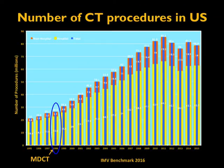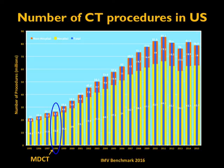I also want to discuss the growth of CT procedures in the US. This graph shows the number of CT procedures in the US over the past 15 years. The number of CT procedures has grown linearly from 26 million procedures in 1998 all the way to close to 80 million procedures as of 2015, both in hospital and non-hospital settings. Multi-detector CT became commercially available in 1998, and that has led to a tremendous growth in CT procedures.